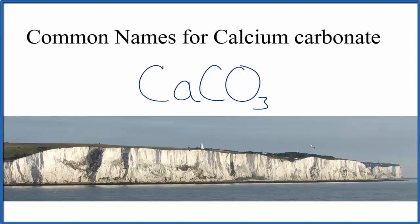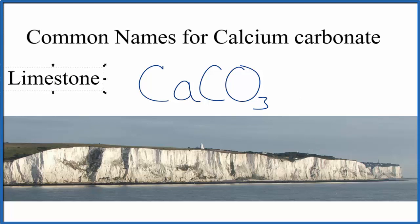One of the common names you'll hear for calcium carbonate is limestone. If you look at this picture, these are the Cliffs of Dover — all of the white here is limestone being eroded away. So calcium carbonate CaCO3's common name is limestone because limestone is common and it's a source of calcium carbonate.